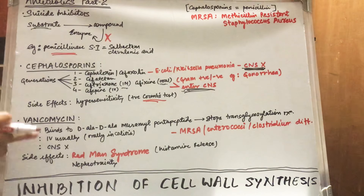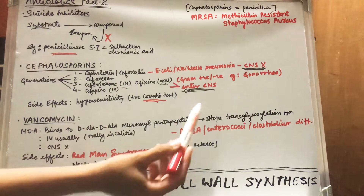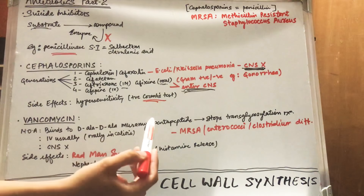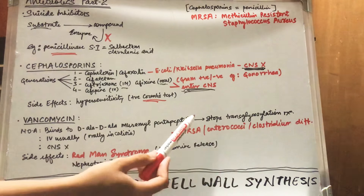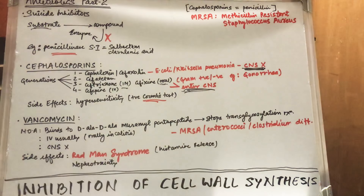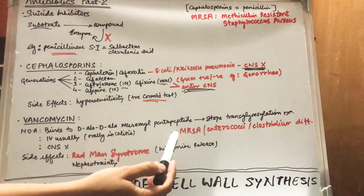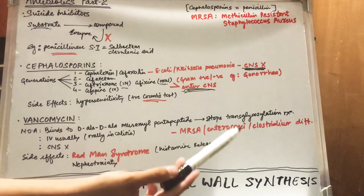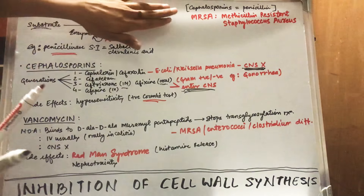The mechanism of action of vancomycin is a little bit different. It binds to the D-Ala-D-Ala muramyl pentapeptide, and after binding to this pentapeptide it stops the transglycosylation reaction — meaning it again inhibits cell wall synthesis. It is used against organisms such as MRSA, enterococci, and Clostridium difficile.